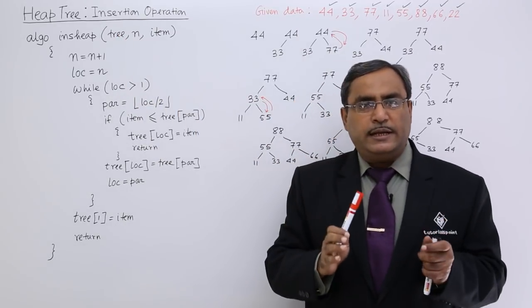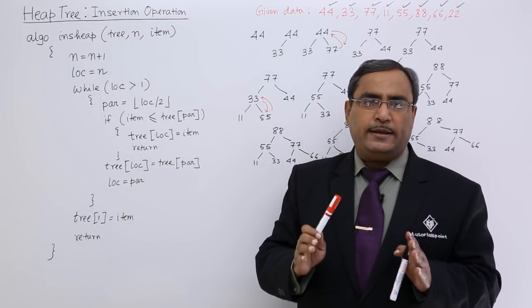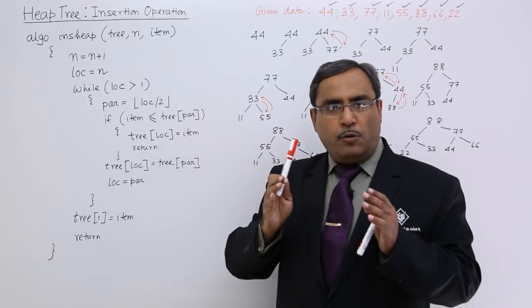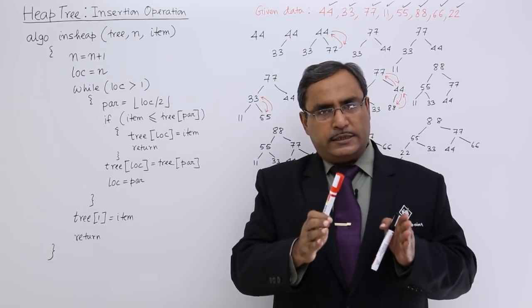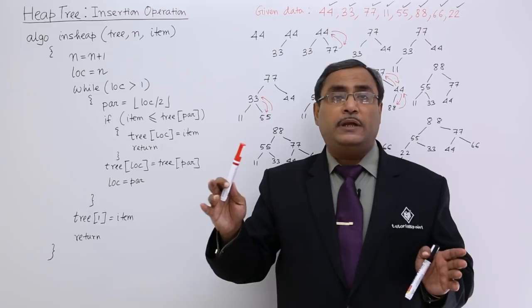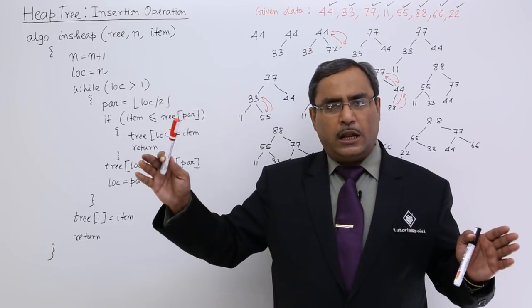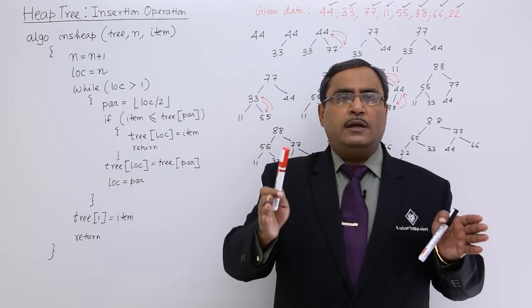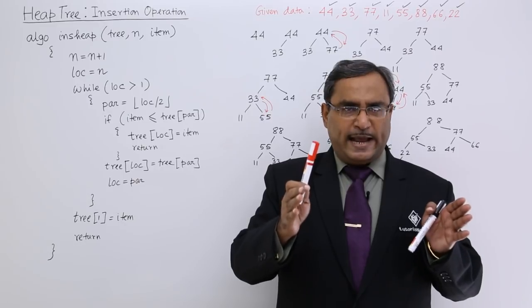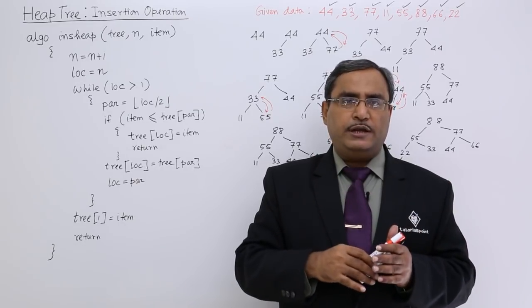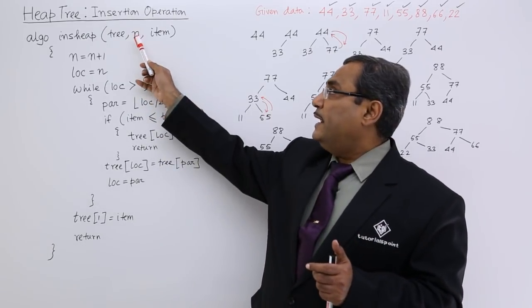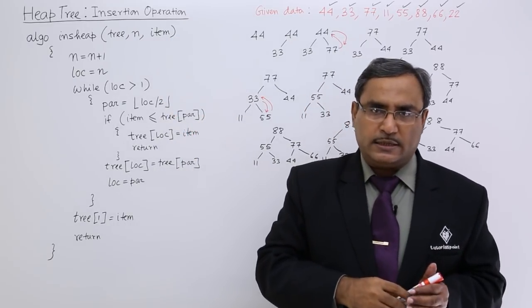The first parameter is the tree, that is the array. Next parameter means how many number of data are there residing in the tree. It does not indicate the size of the array. The size of the array might be long enough but we are having some limited number of data pre-existing on this particular tree array. This is my N and item is the new data going to be inserted.